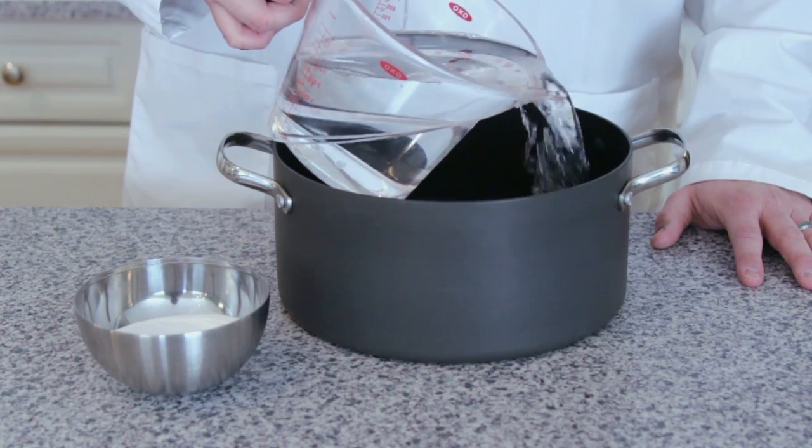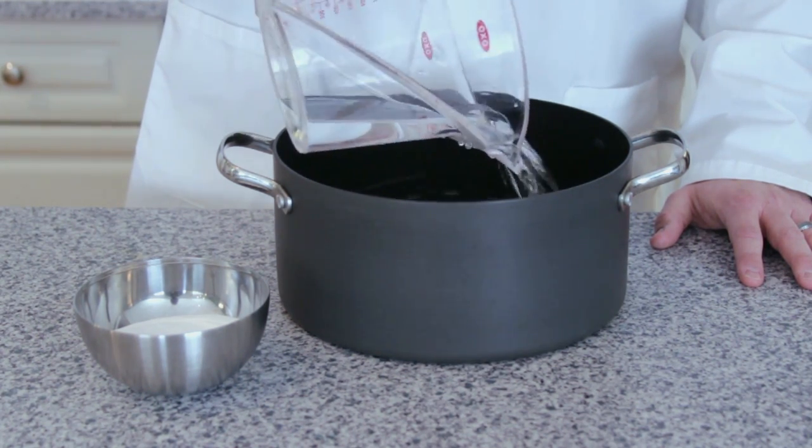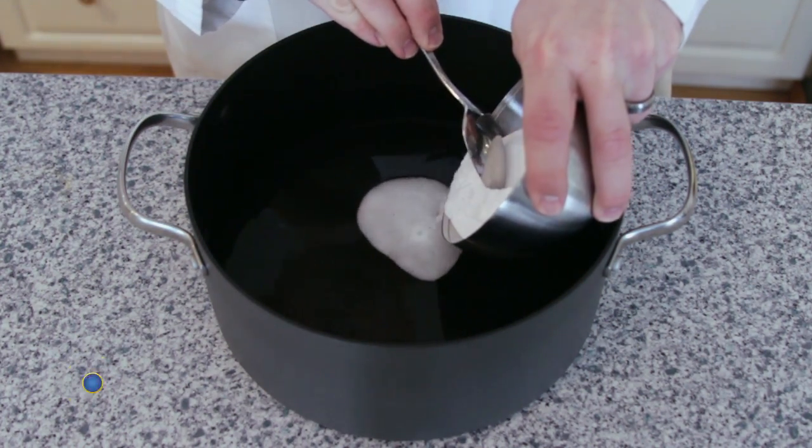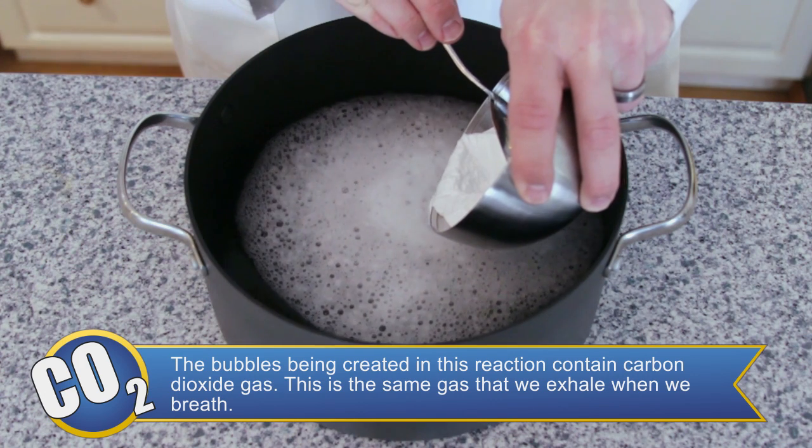To start, put 2 liters of vinegar into a pot. Then, slowly add 140 grams or 8.5 tablespoons of baking soda to your pot of vinegar.